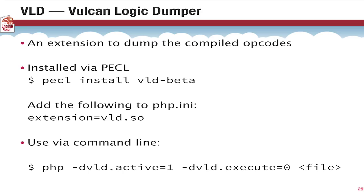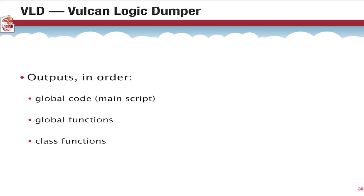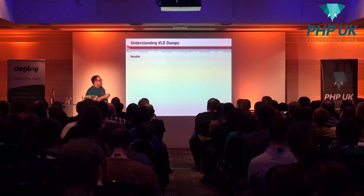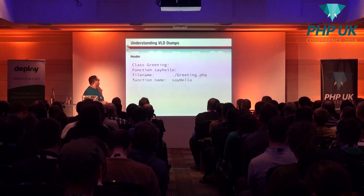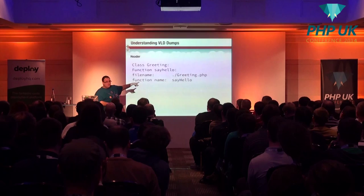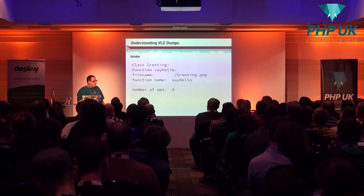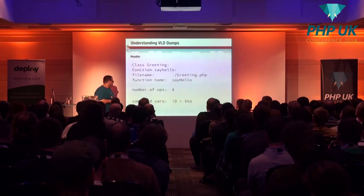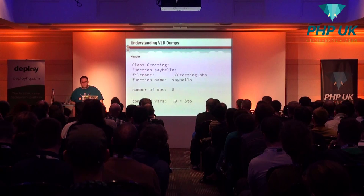VLD outputs three different things: it dumps the global code first — anything in your main script — then it dumps global functions, then class functions. Looking at dumps, they can be quite complicated. They all start with a header that tells you what class you're in, what function, what file you're executing. It tells you the number of ops — literally the number of opcodes dumped — and also the compiled variables. That compiled variables line is incredibly important.